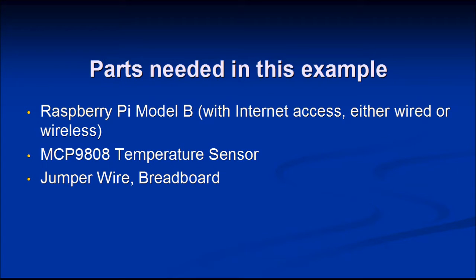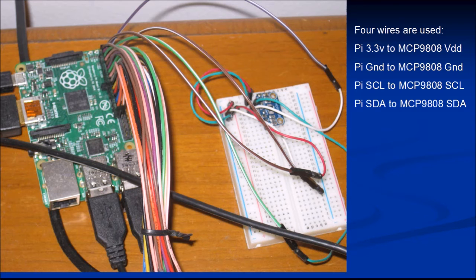For this example you need the following parts: a Raspberry Pi Model B with internet access — wired or wireless — an MCP9808 temperature sensor, some jumper wires, and a breadboard. The setup has only four connections: power, ground, and the Raspberry Pi SCL and SDA connected to the temperature sensor terminals.